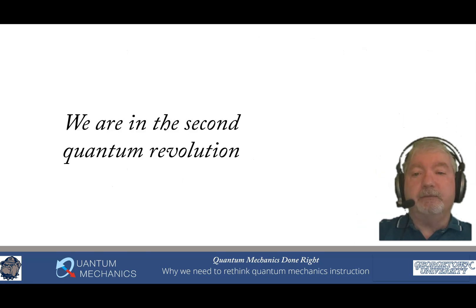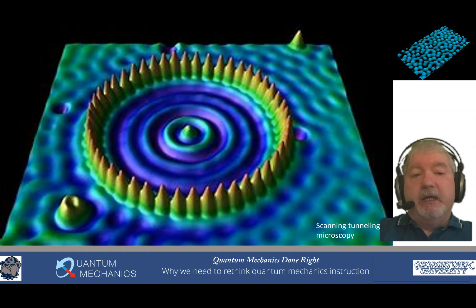We're in the second quantum revolution. Here I'm showing you an STM, that stands for scanning tunneling microscopy, of a quantum corral. Each of those pointy things are metal atoms that have been placed in a circular pattern. And then that ring-like pattern inside is the quantum mechanical electron probability wave distribution. And these are the kinds of things we can do now in the second quantum revolution. You can make a quantum corral and observe the properties of the quantum corral with a scanning tunneling microscope.